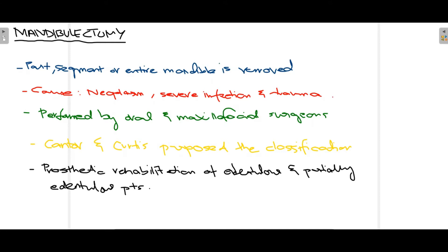These different variations of mandibulectomy depend on the actual pathology present in the mandible, which suggests whether part, segment, or the entire mandible should be removed as advised by the surgeon. The most common causes for mandibulectomy are neoplasm (either benign or malignant), severe infection, trauma leading to necrotic bone, or in some cases congenital causes.